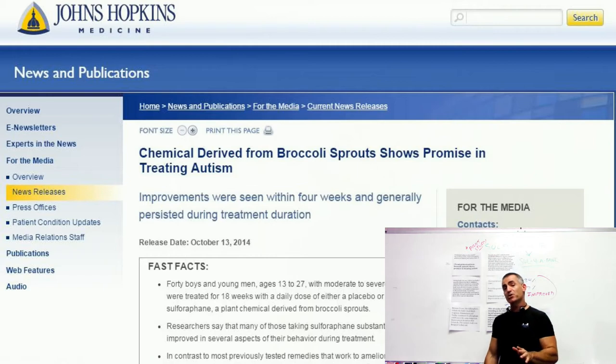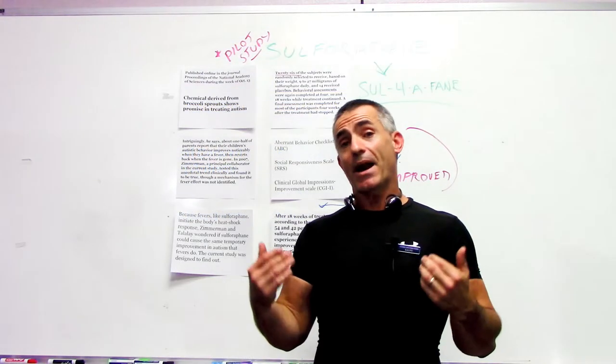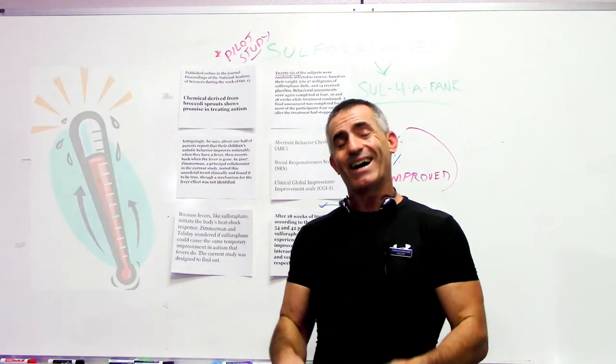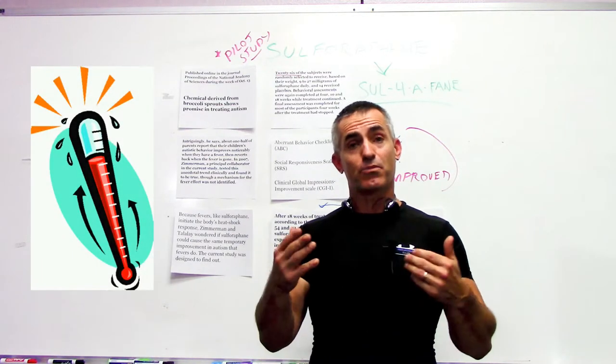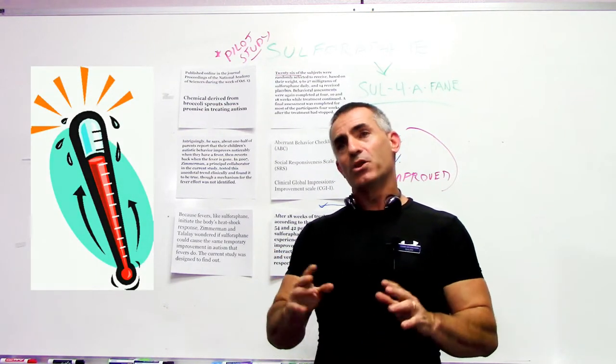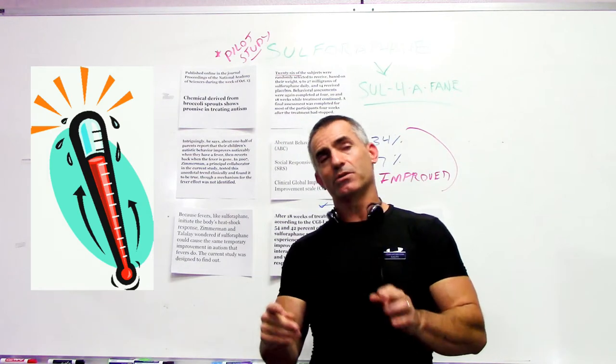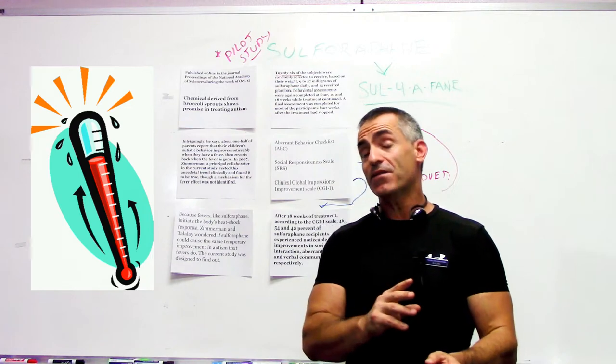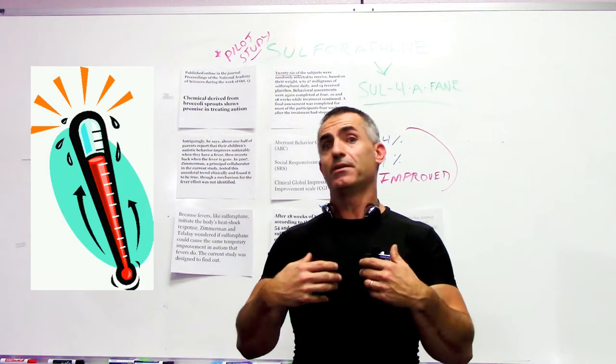Now what researchers did here was what researchers do best, a little bit of detective work. When interviewing parents of children with autism, the parents would often say through observation that when the child had a fever, a lot of the symptoms of autism began to improve. So the researchers said, what out there could kind of mimic the exact same thing that fevers do without actually giving the children fevers?